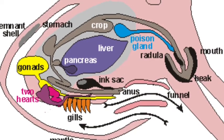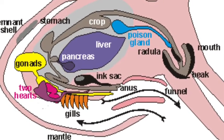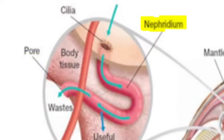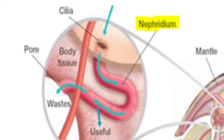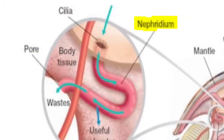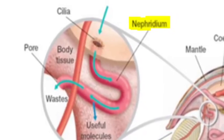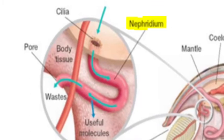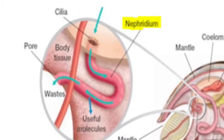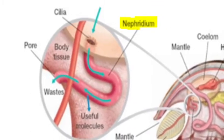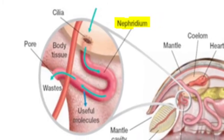In the excretory system of the octopus, waste is eliminated through the use of two tubular cellular structures called nephroidia, which function similar to the vertebrate kidney. This is where nutrients and other substances are taken in by the octopus and absorbed into the body. Then excess fluids and waste continue through these tubes and empty into the mantle cavity, eventually exiting the body through a funnel at the base of the octopus's head.